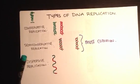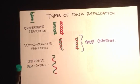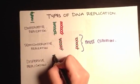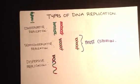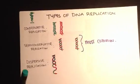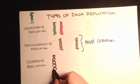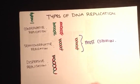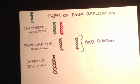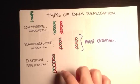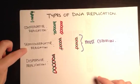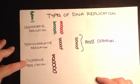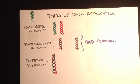So that's what it looks like. So there will be two of these that are formed. I'm just not going to draw it out because it takes too much time, but I don't want you guys to get semi-conservative and dispersive confused with one another because they are very different.